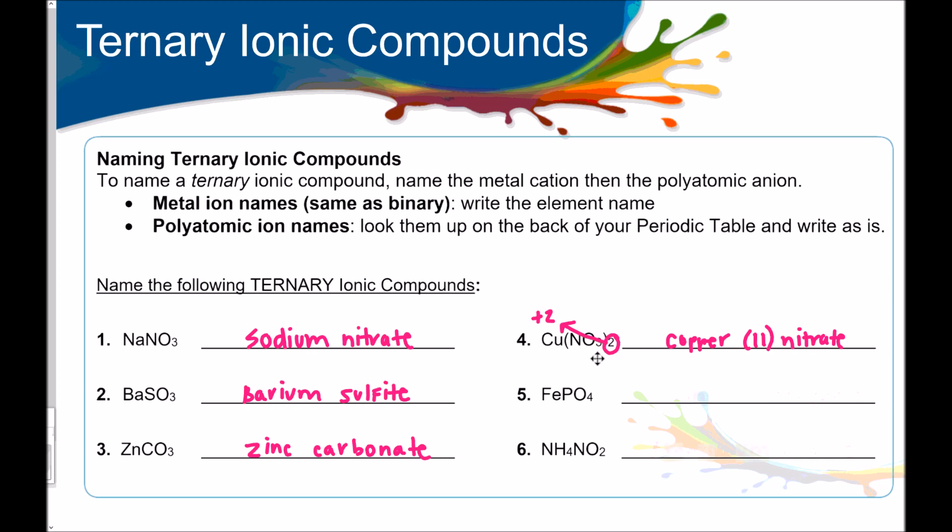Number five, iron phosphate. Well, it's not that simple, because iron is multivalent. If we look up phosphate on the back of our periodic table, its oxidation number is minus three. So, iron has to be plus three to offset this. So, iron three phosphate is the name of number five. Number six, this is ammonium, and this is nitrite. Ammonium nitrite. Here's an example where we have two polyatomic ions stuck together. Just name them in order. Ammonium nitrite.